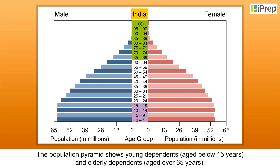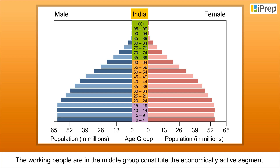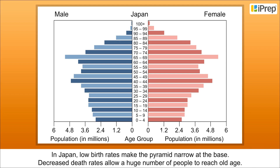The population pyramid shows young dependents aged below 15 years and elderly dependents aged over 65 years. In Japan, low birth rates make the pyramid narrow at the base. Decreased death rates allow a huge number of people to reach old age.